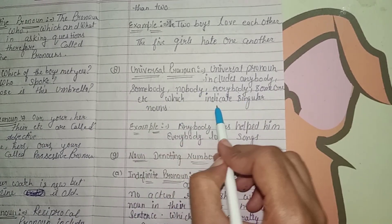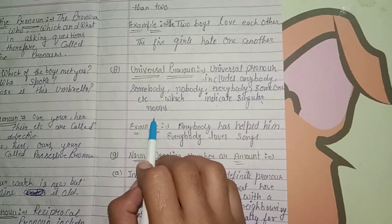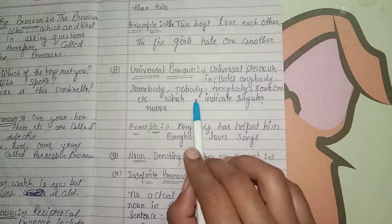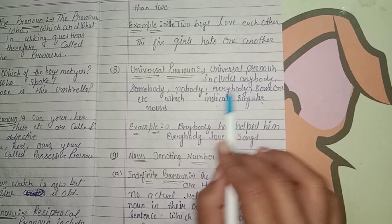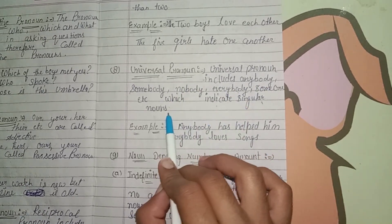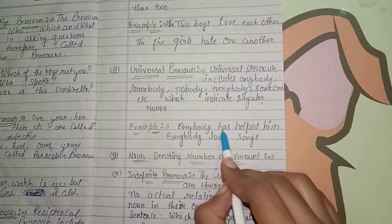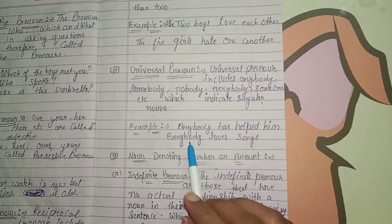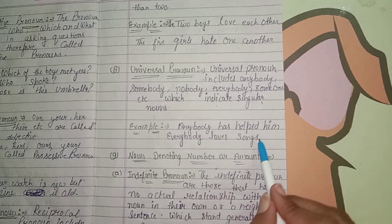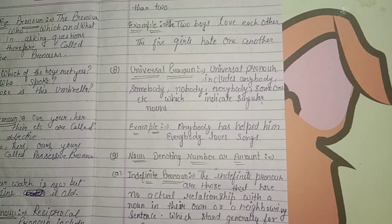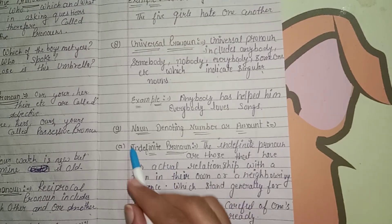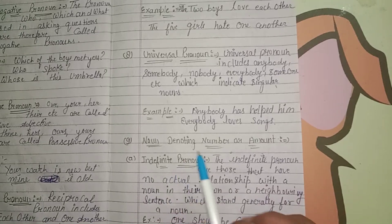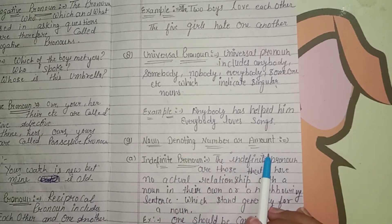Eighth is universal pronoun. Universal pronouns include anybody, somebody, nobody, everybody, someone, etc., which indicate singular nouns. For example: anybody has helped him. Everybody loves songs.